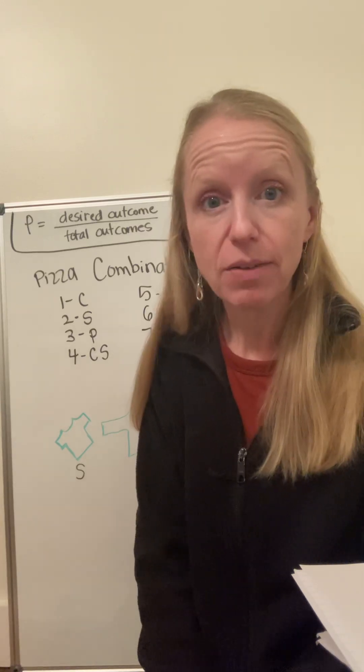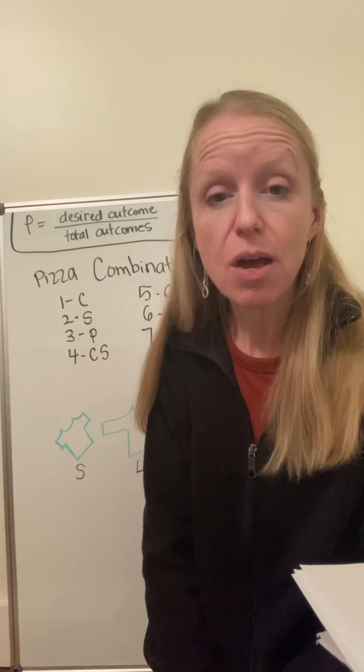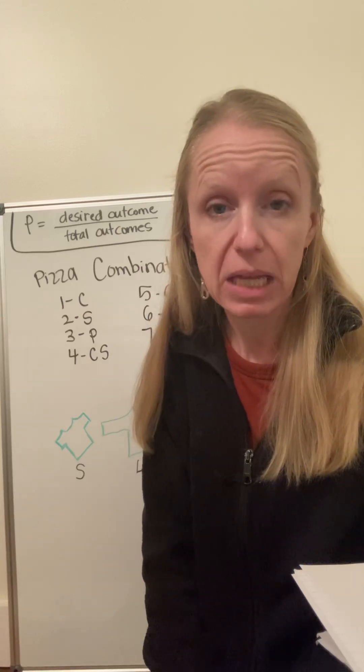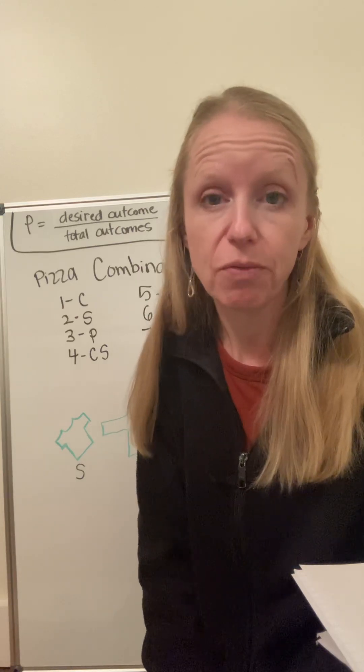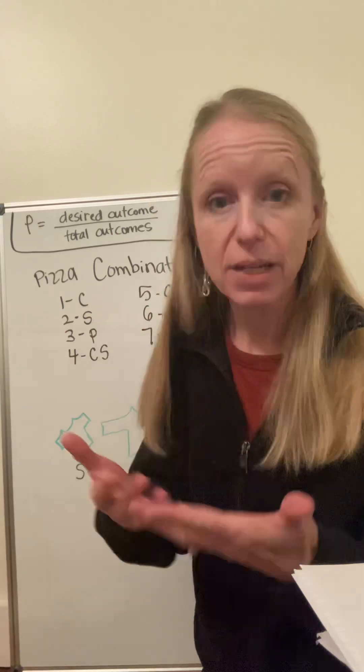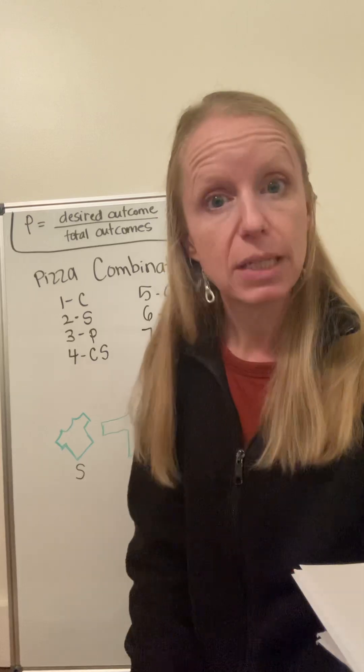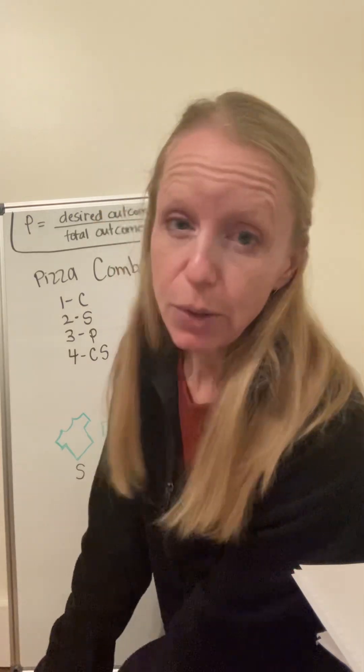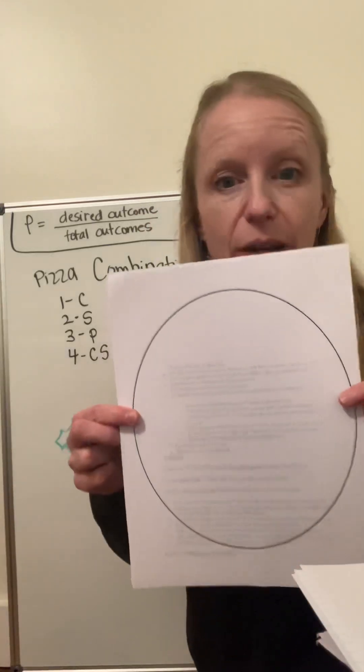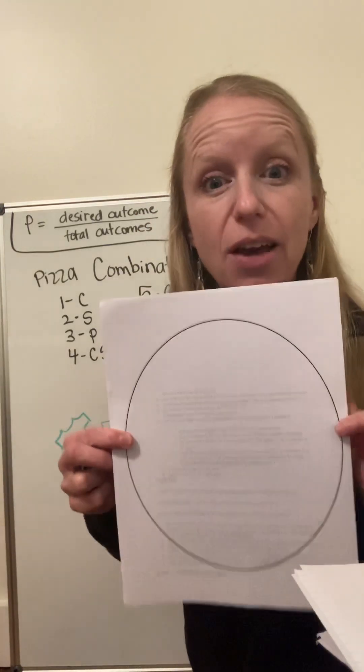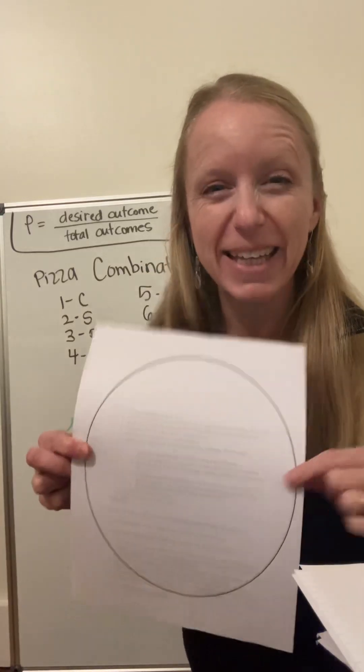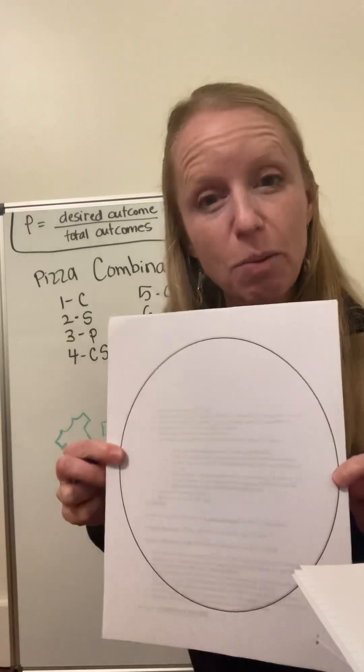What is the probability that you're going to get the pizza that you want? And what do we have to figure out to know that? Well, we have to know using those three ingredients, what are all the different kinds of pizzas they can make? And then we decide which one we want. And then we'd figure out the probability that we would get the combination or arrangement of ingredients that we would desire. So in our classes, each kid will get a card stock with a big pizza circle on it.